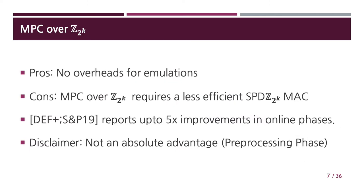Meanwhile, there are also limitations in that this approach requires a less efficient MAC, namely the SPDZ2K MAC. However, a follow-up work reported that in serious applications such as decision tree and support vector machine, MPC over Z2K shows up to 5 times improvement in the online phase compared to MPC over finite fields. A disclaimer here is that this does not mean an absolute advantage, since for the preprocessing phase, there is still a substantial gap between the ZP and Z2K cases. Actually, the goal of our work is to reduce such a gap.